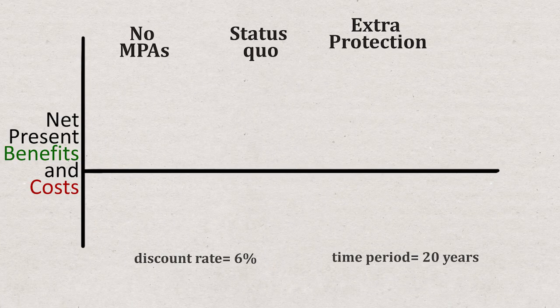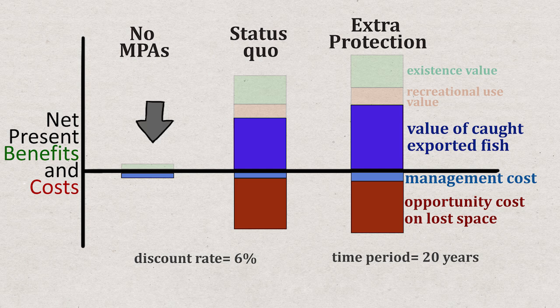Using a discount rate of 6%, they found the present costs and benefits to be this, over a 20 year period. Here, there is no marine protected area, so there is no benefit from fishing migrating out of the area.